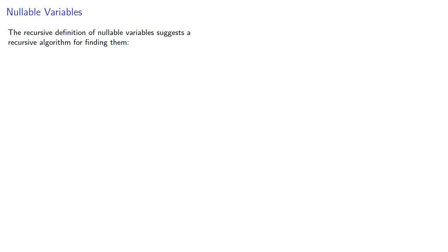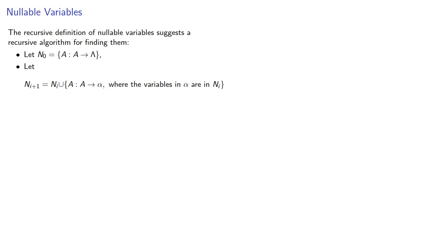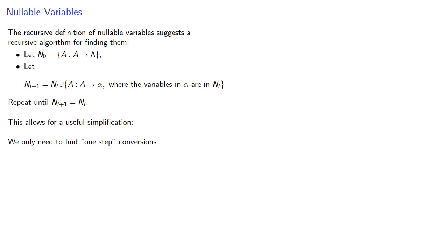The recursive definition of a nullable variable suggests a recursive algorithm for finding them. We start with an initial set — the set of all variables that immediately produce lambda. Then we add all variables that produce a string of nullable variables, and repeat this process until the set stabilizes. This allows for a useful simplification: we only need to find those one-step conversions.